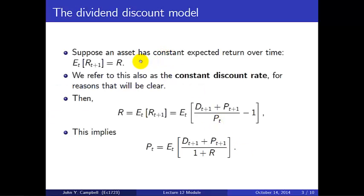The key assumption of the dividend discount model is that an asset has a constant expected return over time. Its expected return, E_t(R_{t+1}) — the expectation at time t of the return in the next period — is just a constant number that we call R. We refer to this constant number, the expected return, also as the discount rate.